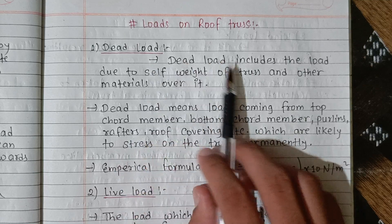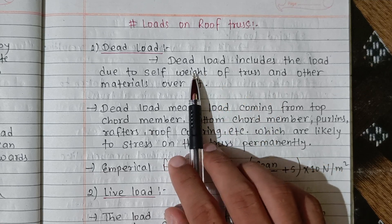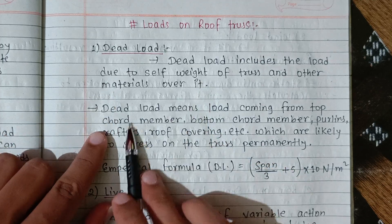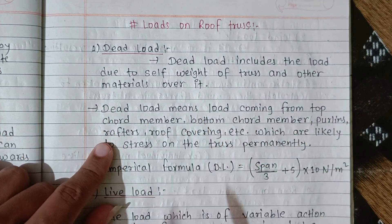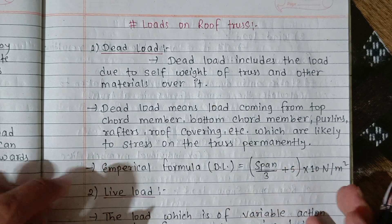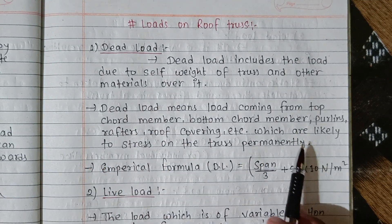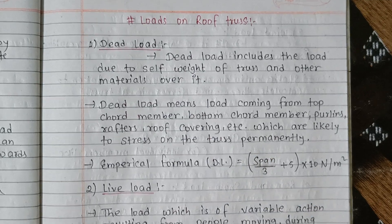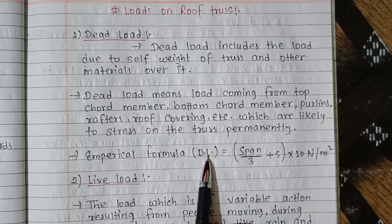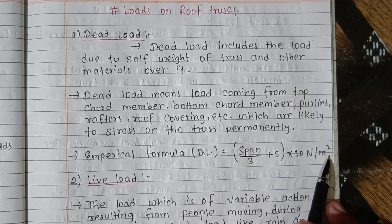Dead load includes the load due to self weight of the truss and other material over it. Dead load means load coming from top chord member, bottom chord member, rafter, roof covering. Dead load is considered as permanently stressing the truss. Empirical formula: dead load is equal to span/3 + 5, given in newton per meter square.